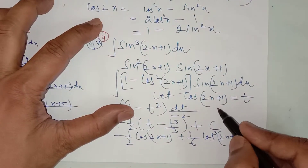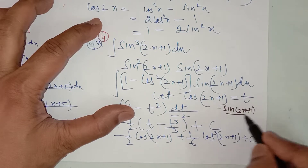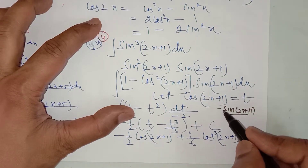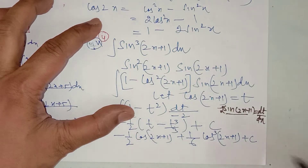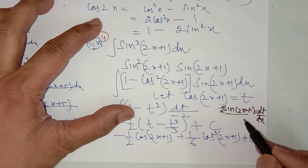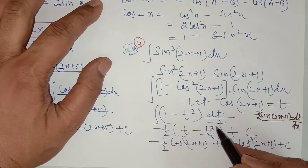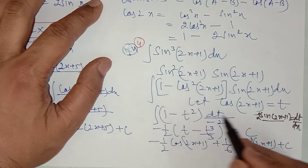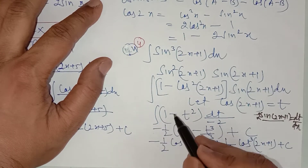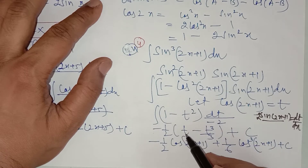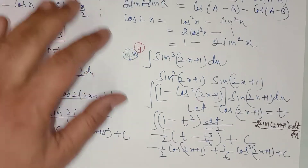Take your own time to simplify. Once you have done the substitution, dx = dt / (-2 sin(2x+1)). The sin(2x+1) cancels out, and it becomes dt/(-2) · (1 - t²). So you integrate (1 - t²) dt with a factor of -1/2: the integral of 1 with respect to t is t, and the integral of t² is t³/3. Then replace the value of t, which is cos(2x+1).